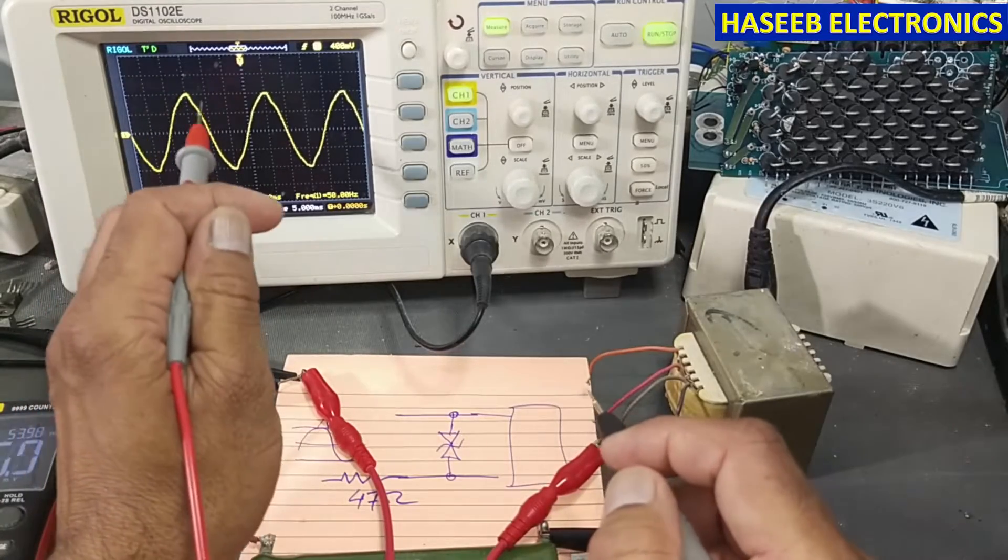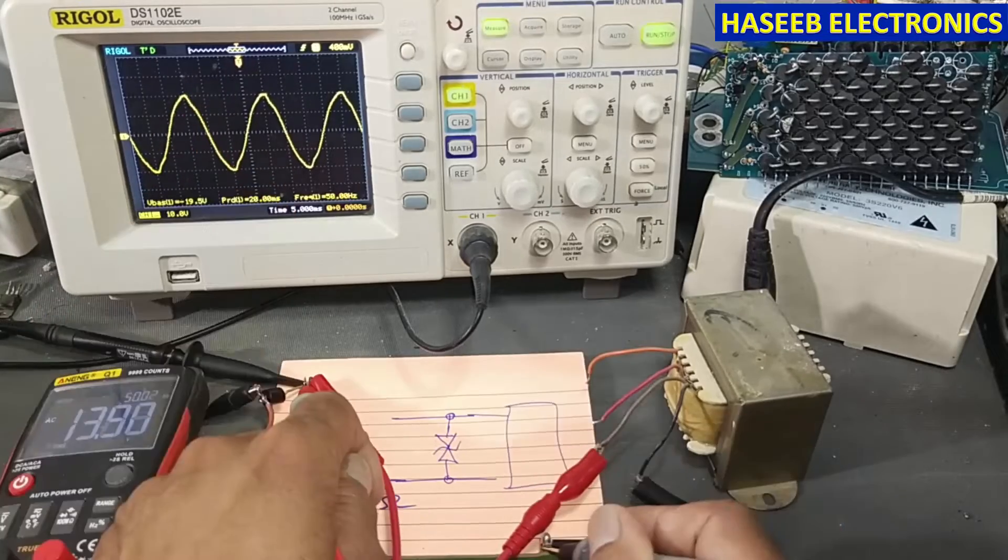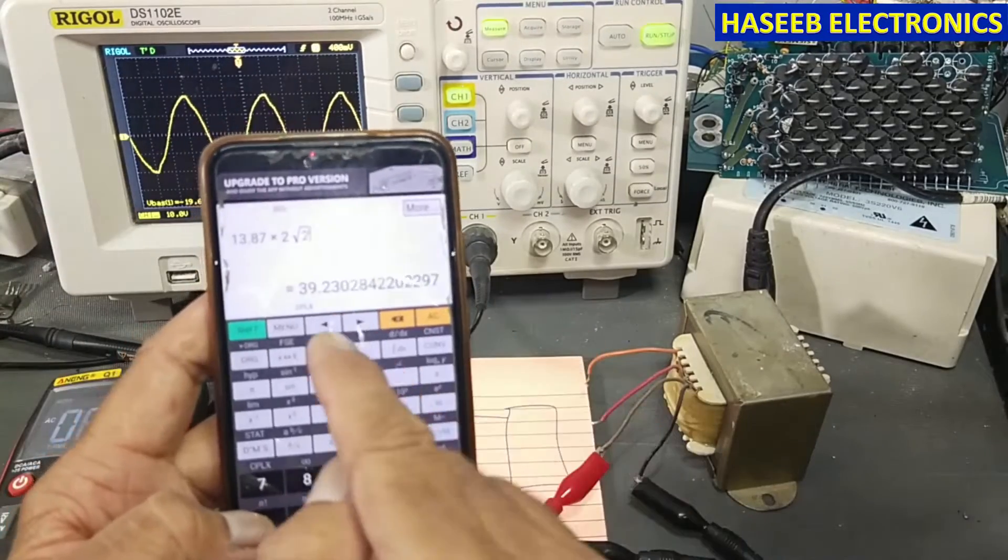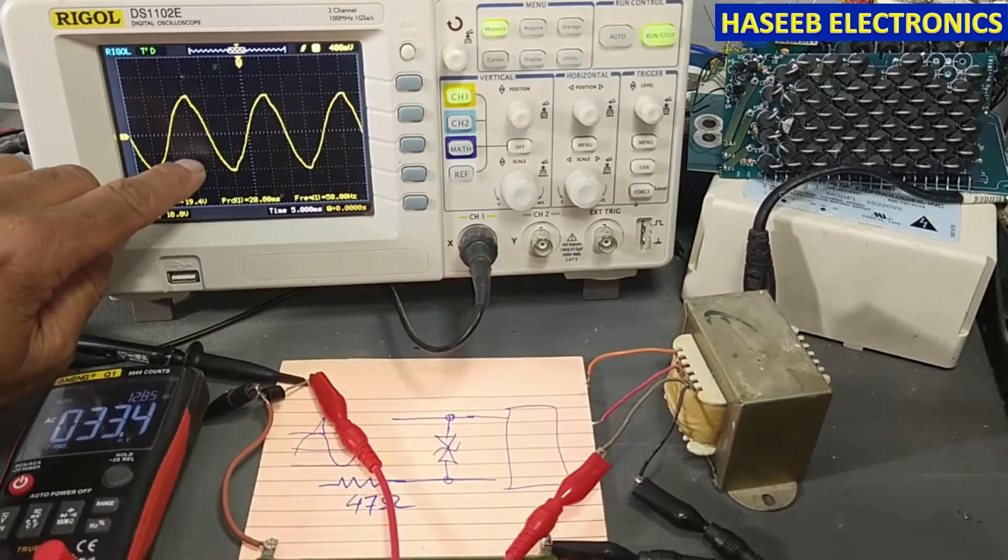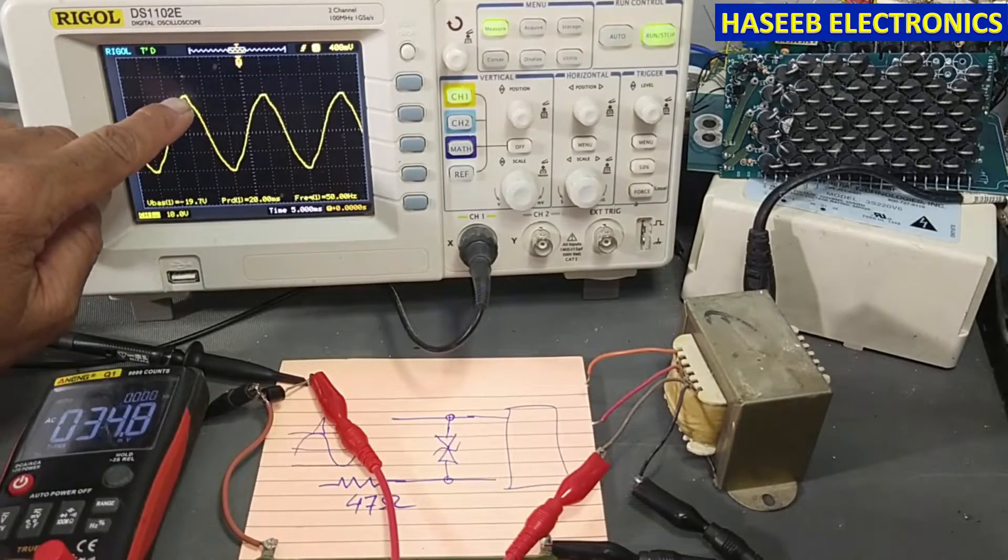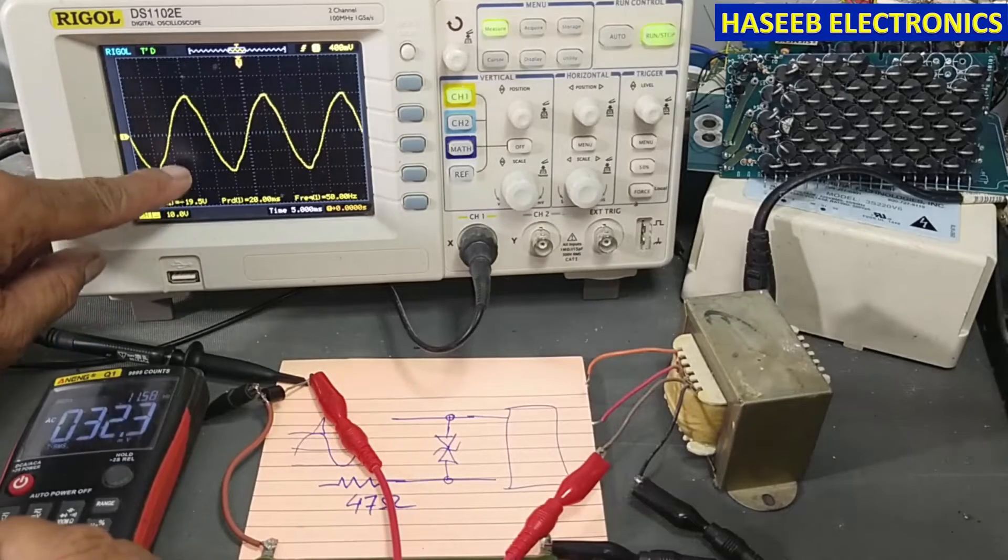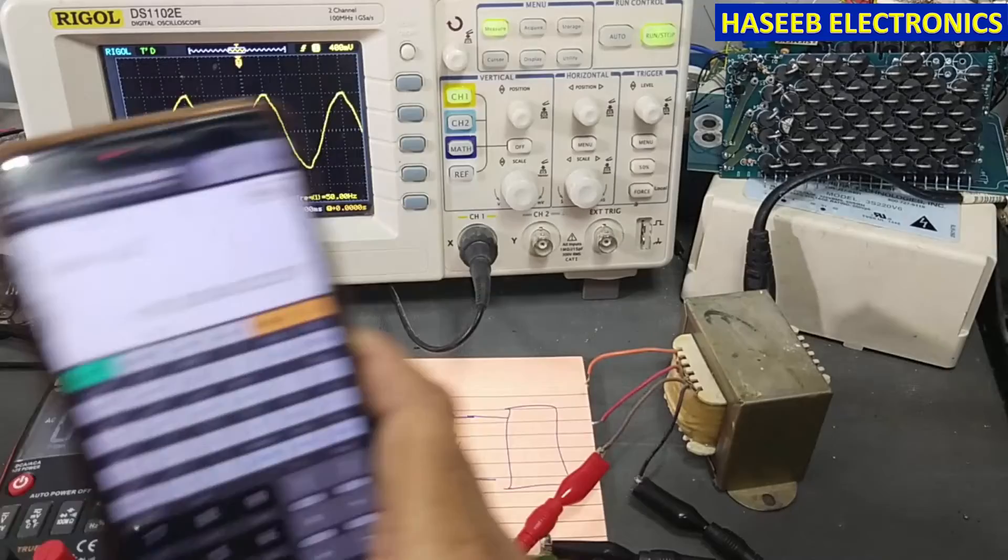It is 39.23 volts peak to peak. At 10 volts per division, it is a 40-volt signal peak to peak. If you check one peak, it is 19.6 volts.